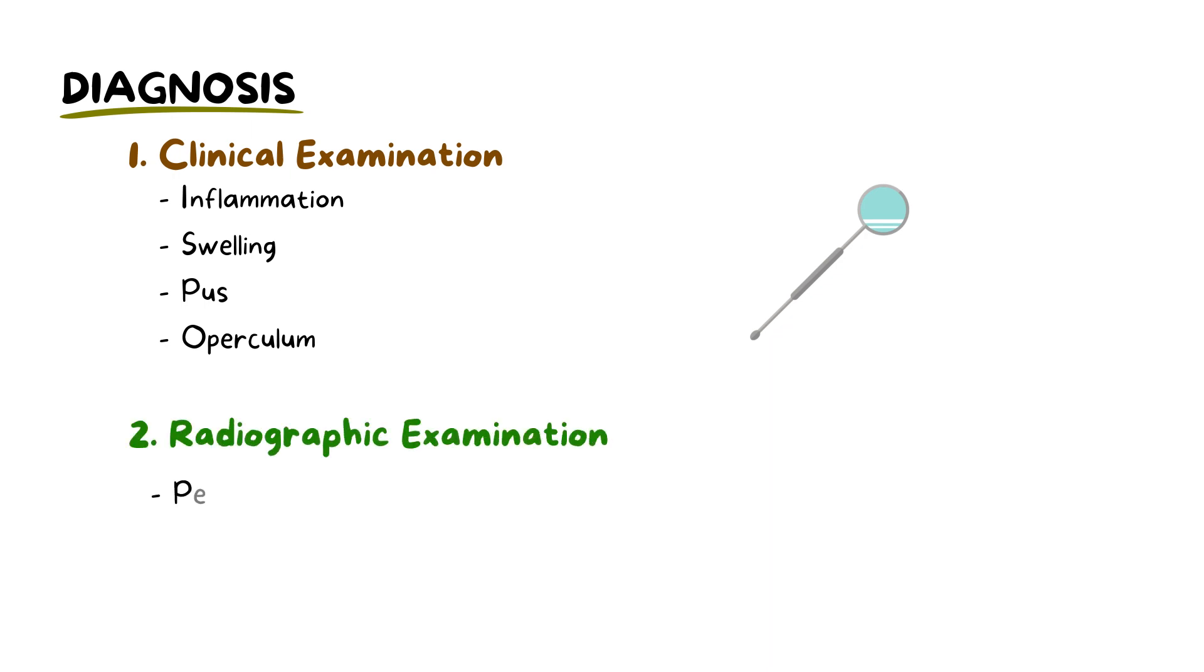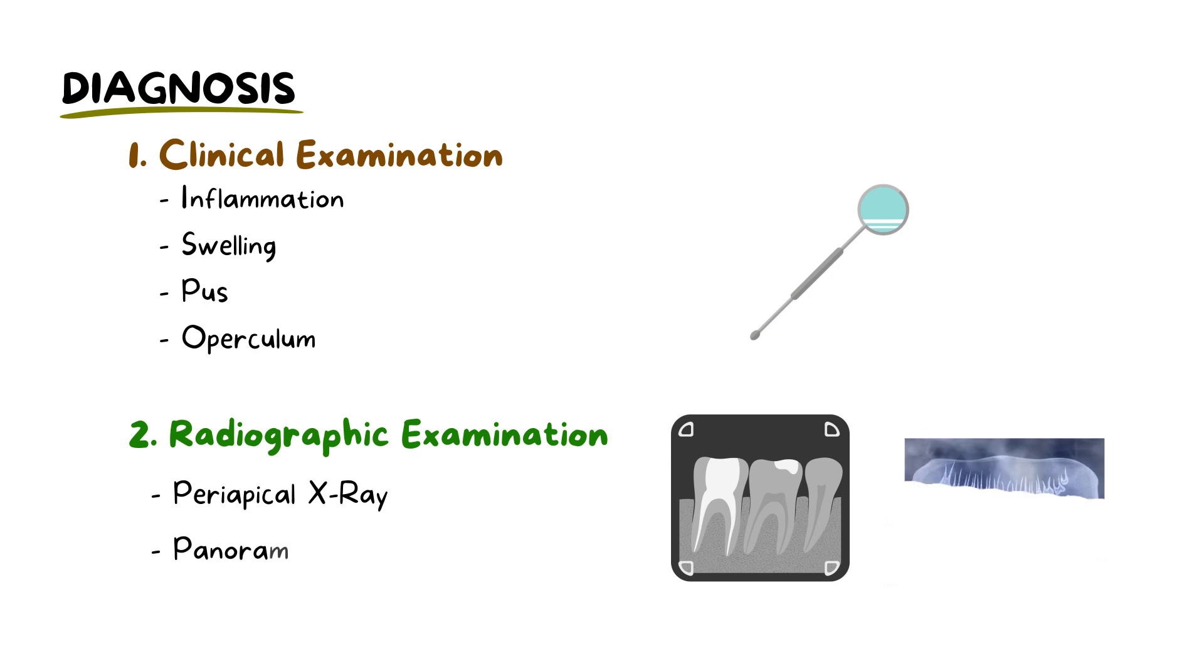Diagnosing pericoronitis relies on the dentist performing a comprehensive clinical examination of the oral cavity, paying special attention to areas around a partially erupted or impacted tooth. Inflammation, swelling, and signs like pus or an operculum often point directly to the condition. A periapical and panoramic x-ray might be used to get a clearer view of the tooth's position to rule out other pathologies.